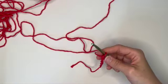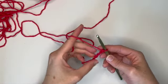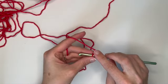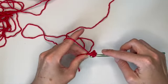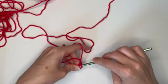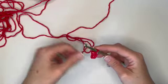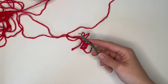And then we're actually going to turn this into a magic circle. So we are going to insert our hook into the very first chain, we are going to grab the yarn and pull through, and we're going to do a slip stitch. So we're going to be pulling it through the chain that's on our hook as well.